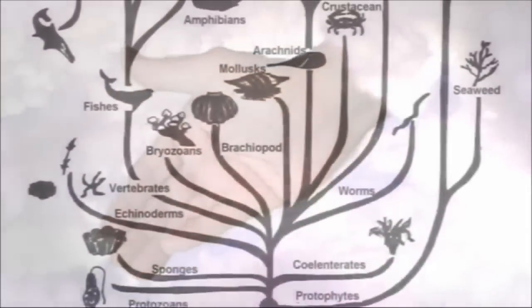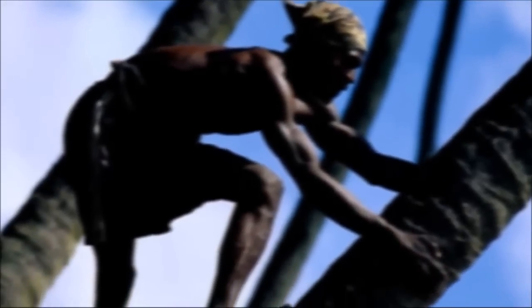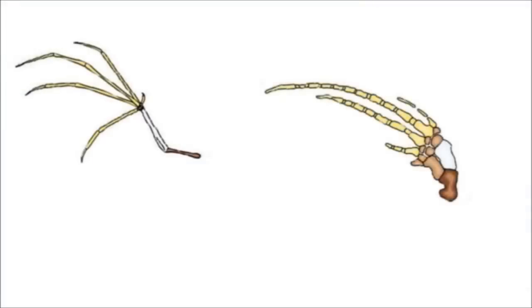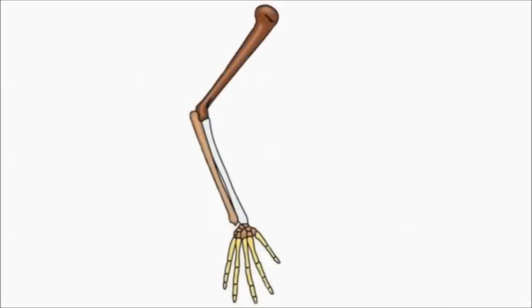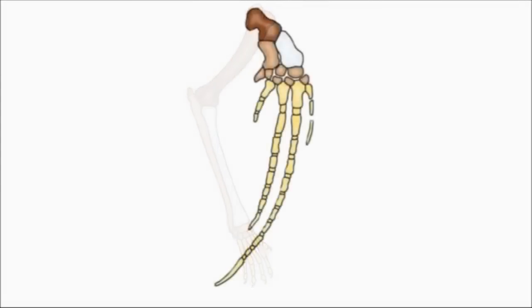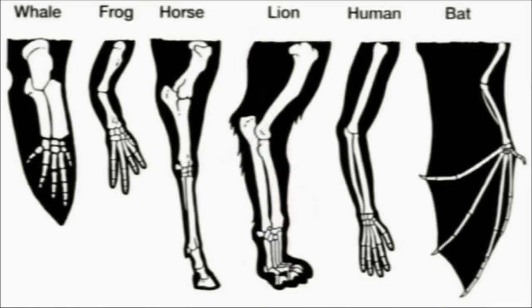In their defense, theists often claim God created life according to a plan, therefore it is not surprising we observe similarities in anatomical structures between different species. Although this might explain similarities between the forearms of primates and humans, surely the best way to design a bat's wing is not also the best way to build a whale's flipper. Such anatomical particularities make no sense if the structures are uniquely engineered and unrelated. The forelimbs, wings, flippers, and arms of different mammals are variations on a common structural theme. Similarity in characteristics resulting from common ancestry is known as homology, and such anatomical signs of evolution are called homologous structures.